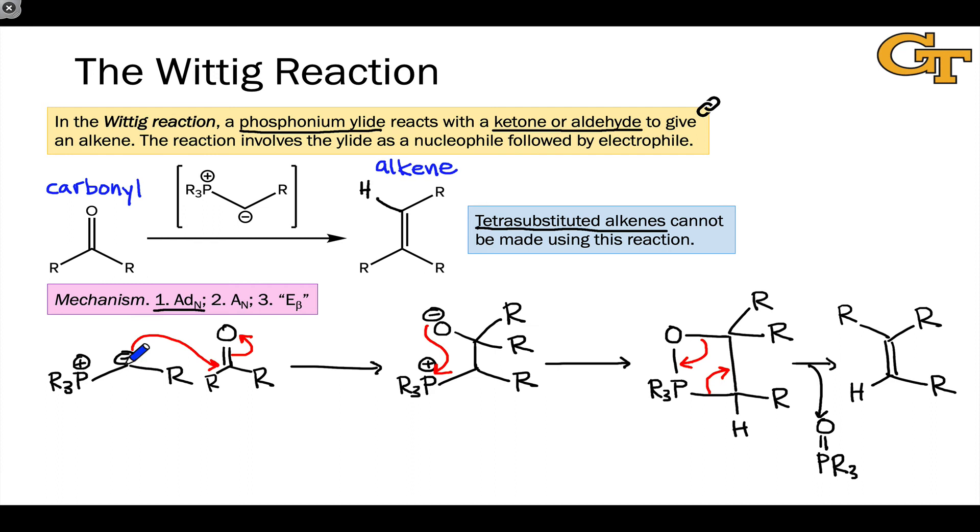At the end of the day, it all stems from the fact that the ylide can act as both a nucleophile, we see that in the first step, and as an electrophile, and we see that in the second step. And the high affinity of oxygen for phosphorus means that this formation of the P=O double bond drives this reaction forward toward the alkene product.